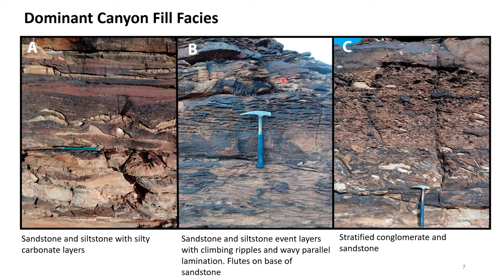Facies B and C dominated the basal canyon fill and were much coarser comparatively. Facies B consists of sandstone and siltstone event layers with flutes at the base, parallel lamination, and climbing ripples upward. Facies C occurred at very discrete levels within the basal canyon fill and was composed of stratified conglomerate — showing beautiful stratifications and even potentially some imbrication — capping fine to very fine sandstones.